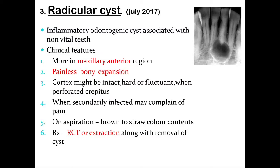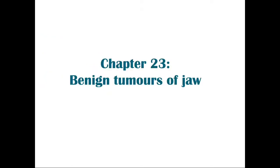Radicular cyst is the other name for the periapical cyst. It is an inflammatory or odontogenic cyst associated with non-vital teeth. The clinical features are that it is most commonly seen in the maxillary anterior region. It is a painless bony expansive lesion with crepitus on palpation. A secondarily infected patient may complain of pain. On FNAC, aspiration may reveal a brown to straw-colored fluid. Treatment includes root canal treatment or extraction along with enucleation of the cyst.